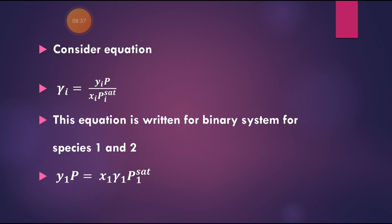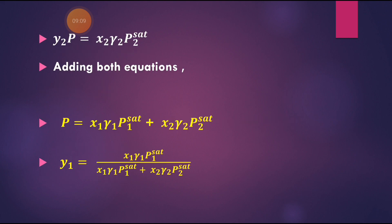For that we use the modified Raoult's law: γᵢ = yᵢP/(xᵢPᵢˢᵃᵗ). For a binary system: y1·P = x1·γ1·P1ˢᵃᵗ and y2·P = x2·γ2·P2ˢᵃᵗ. Adding both equations: P = x1·γ1·P1ˢᵃᵗ + x2·γ2·P2ˢᵃᵗ. The expression for y1 = x1·γ1·P1ˢᵃᵗ / (x1·γ1·P1ˢᵃᵗ + x2·γ2·P2ˢᵃᵗ).